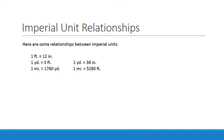Here are some of the relationships between imperial units. One foot equals 12 inches. Inch is the smallest imperial unit. One yard equals three feet, or 36 inches. One mile equals 1,760 yards, or 5,280 feet.